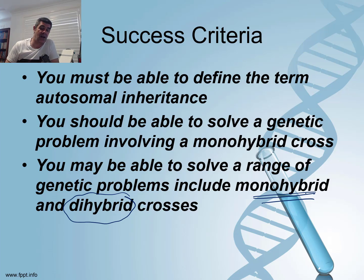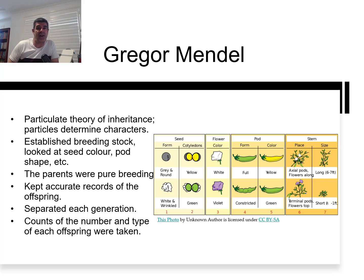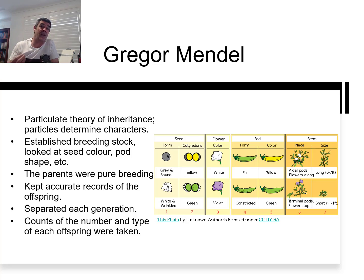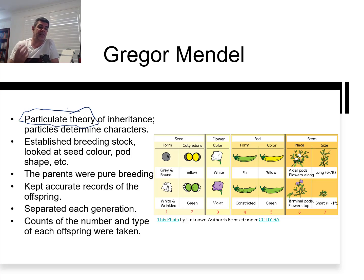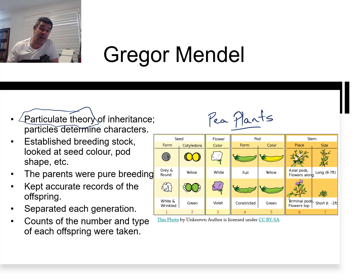Let's have a look at the work of Mendel. Gregor Mendel is the father of genetics. He put together these great ideas as a monk working in a monastery — he had a lot of time on his hands, but he also lacked a formal scientific background. So much of his work remained undiscovered or unrecognized for quite a long period of time. He came up with the particulate theory — that there are little bits inside of us that code for different characteristics and inherited traits. And he used pea plants, which is why you'll see lots of examples involving them.